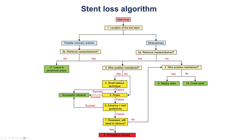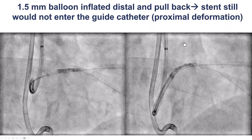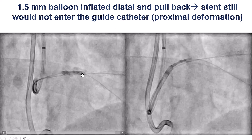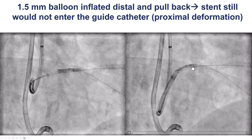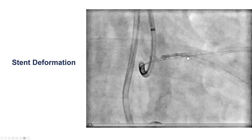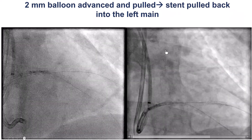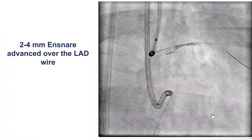When trying to remove a lost stent, the most common technique is the small balloon technique: advance the balloon distally, inflate it, pull it back, and bring the stent back along with it. We tried with a 2.0 mm balloon but could not get it through the stent. We tried a smaller 1.5 mm balloon, inflated it distally, but because of the proximal stent deformation, we could not bring the stent back into the guide catheter. The stent was deformed both proximally and distally. A 2.0 mm balloon brought the stent back into the left main, but it still could not enter the guide catheter.